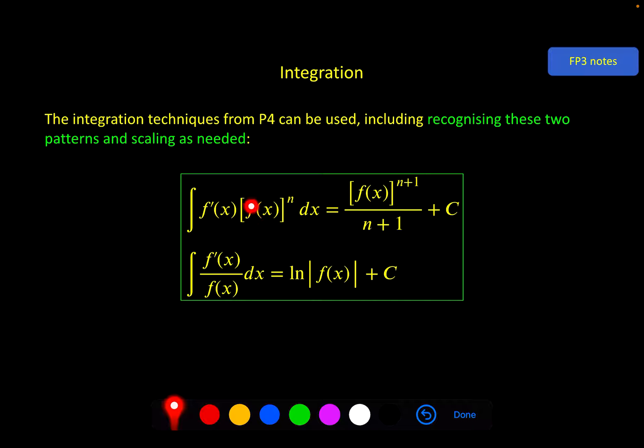And this one, function in a bracket with a power multiplied by the derivative of that function. Increase the power on the bracket, divide by it. And if you can get something matching this exact form, you can write this down directly. And if you get something with this exact form, you can write this down directly. So these two patterns, very useful indeed.